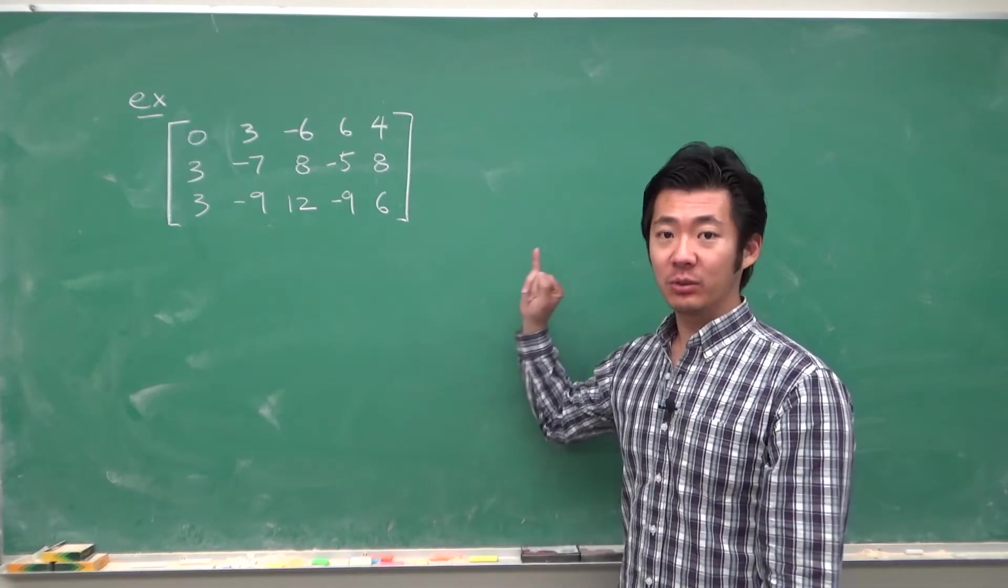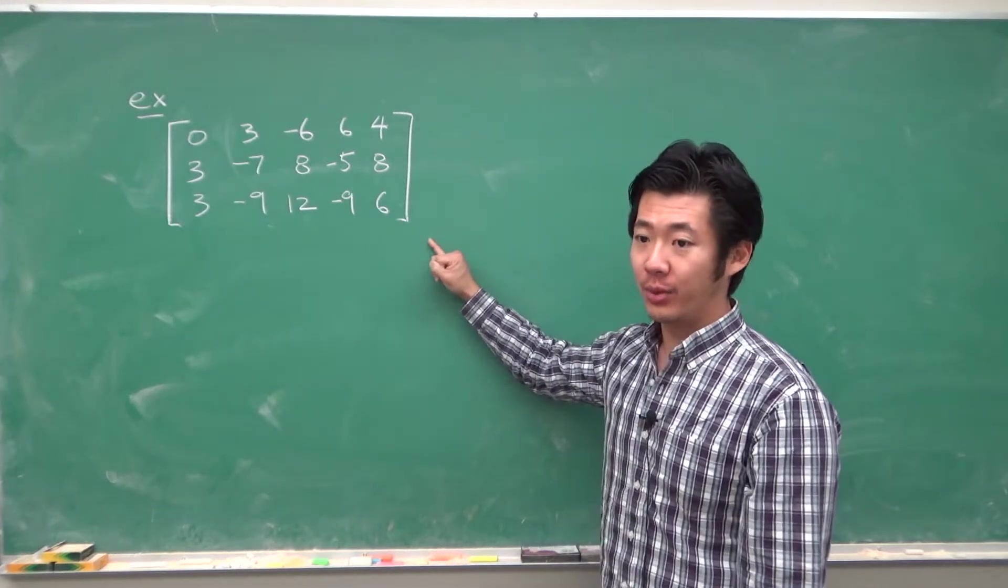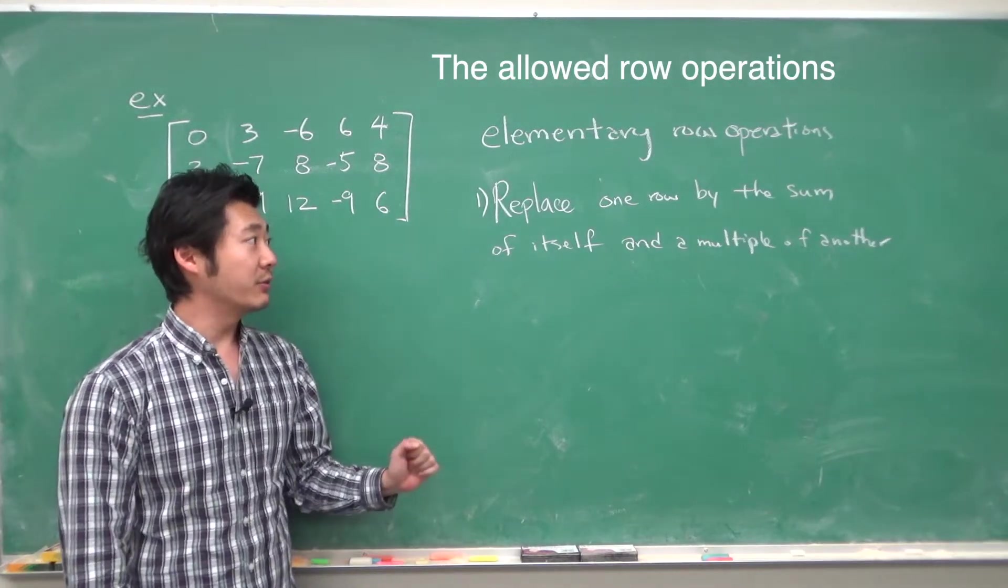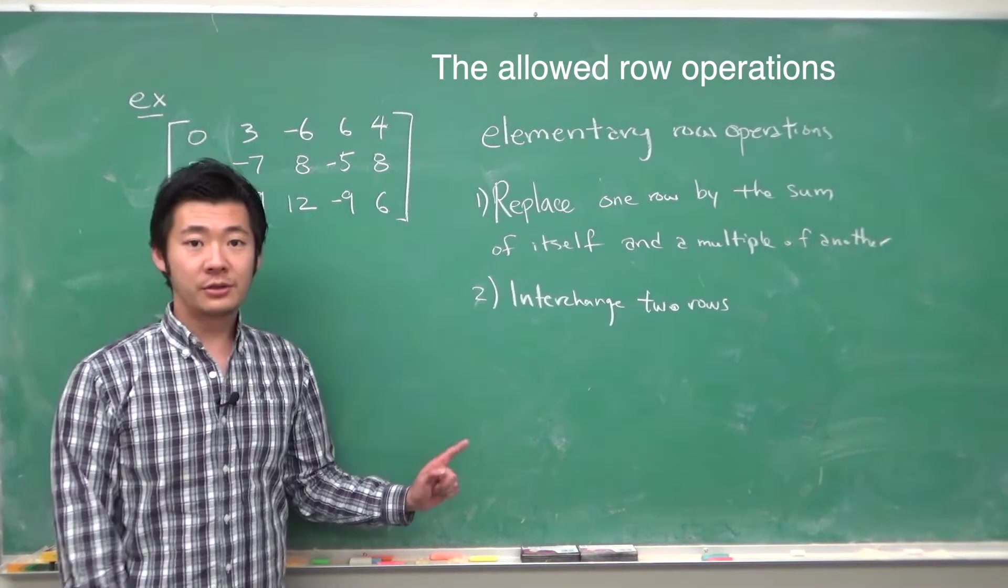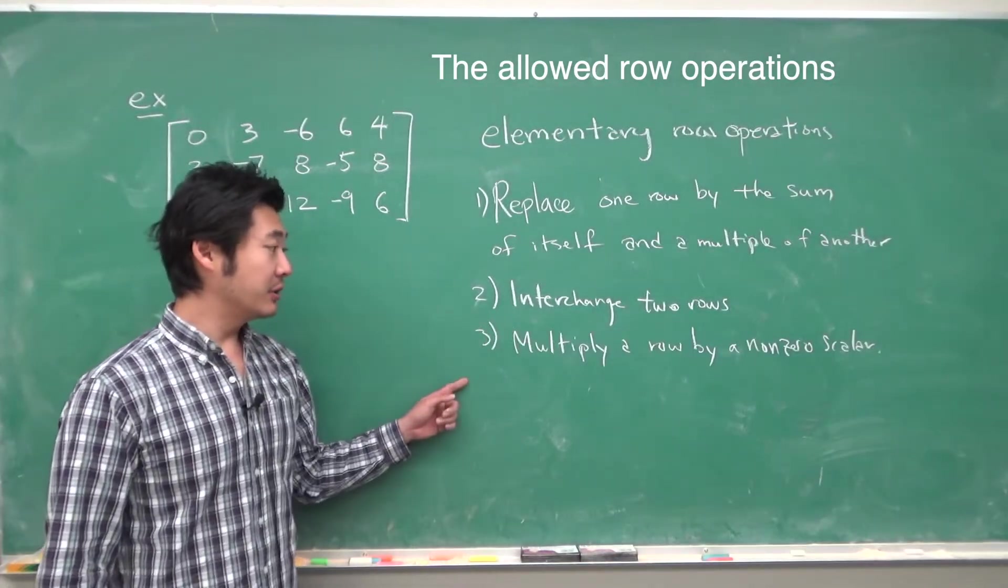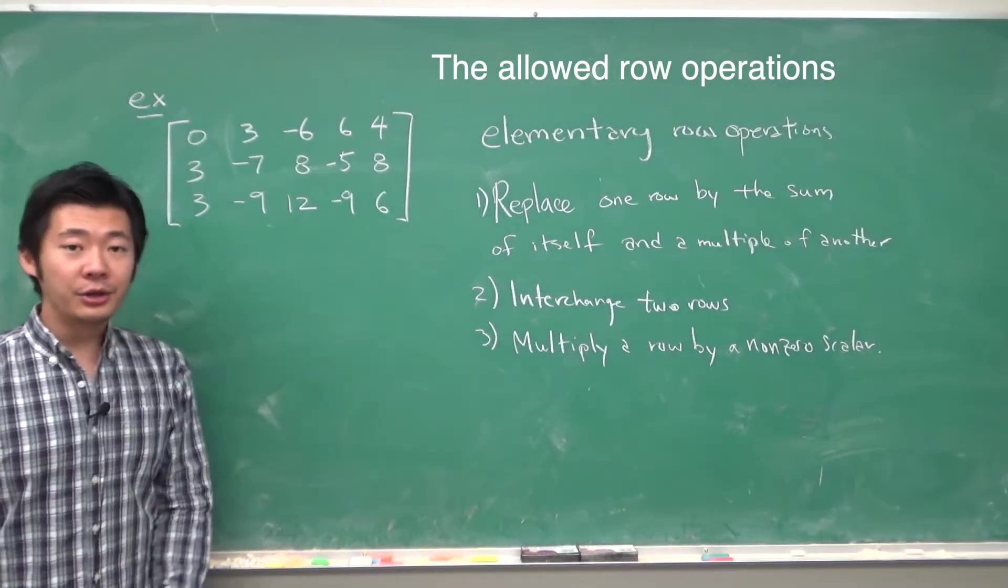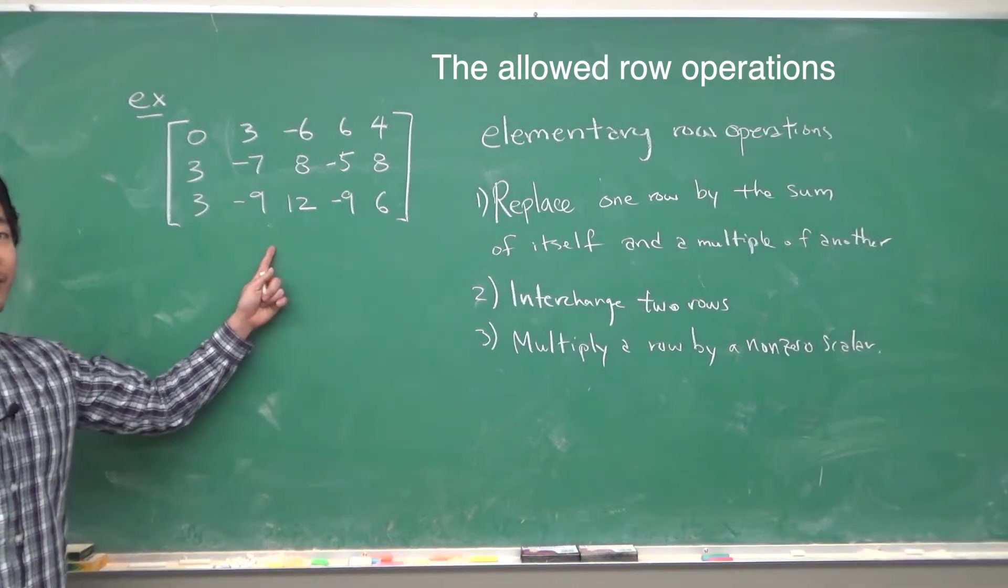Given a matrix, what we want to do is do row operations to bring it into echelon form. So, one, you can replace one row by the sum of itself and a multiple of another. Two, you can interchange two rows. And three, multiply a row by a non-zero scalar, or a number. So, using these row operations, let's bring this matrix into its echelon form.